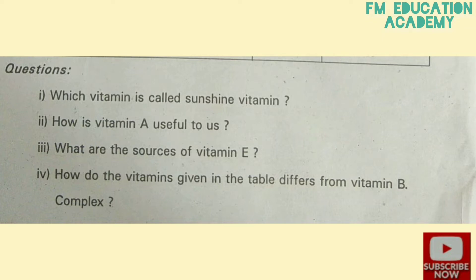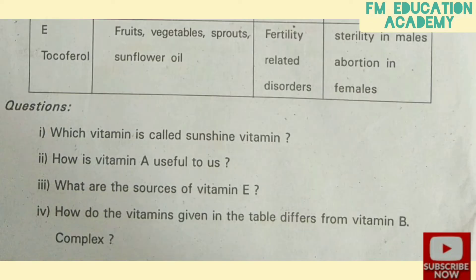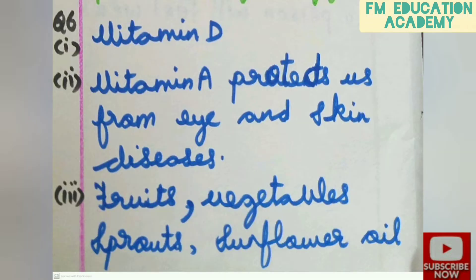Third bit: what are the sources of vitamin E? Looking at the row of vitamin E in the resources column, we can see fruits, vegetables, sprouts, and sunflower oil are the resources.